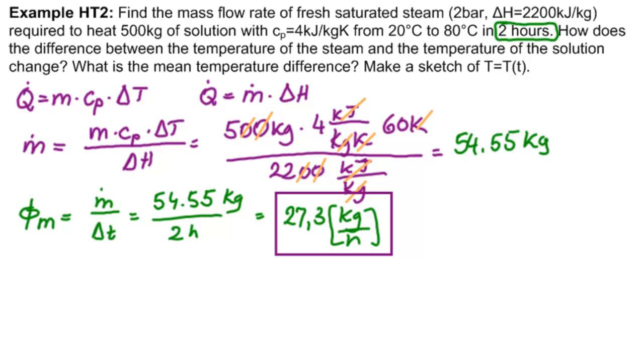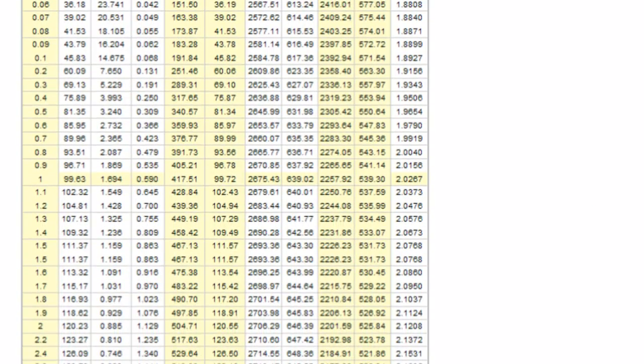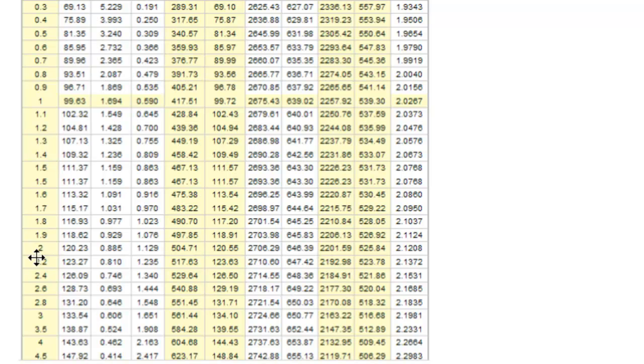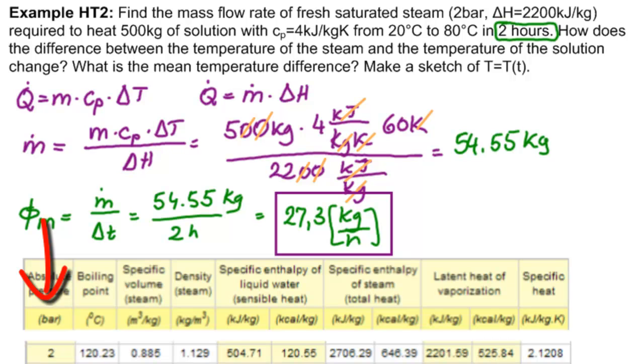We look it up on a table like this. It says properties of saturated steam in bar, because we were working in bar. And we would scroll down to find 2 down here. And we're going to take out this line here that's for 2, and make it bigger so you can see it.